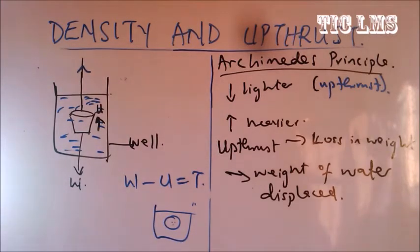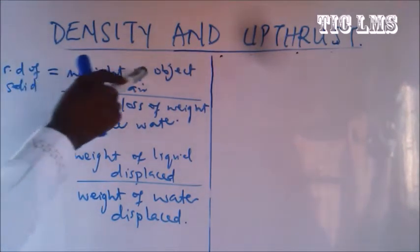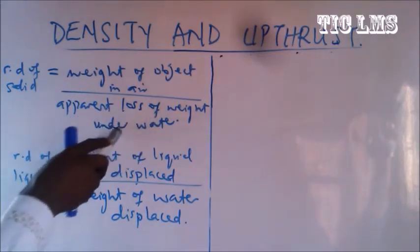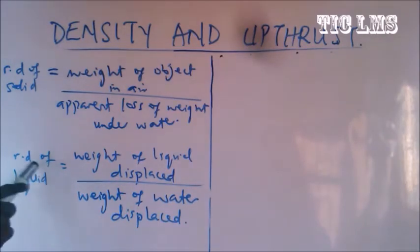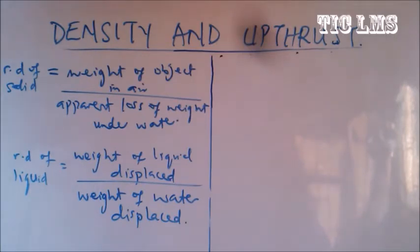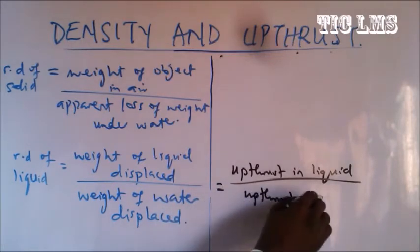There are other derivatives of relative density based on Archimedes' principle. The relative density of a solid equals the weight of an object in air over the apparent loss of weight when it is underwater, which is the upthrust. The relative density of a liquid equals the weight of liquid displaced over the weight of water displaced, or equivalently the upthrust in the liquid over the upthrust in water.